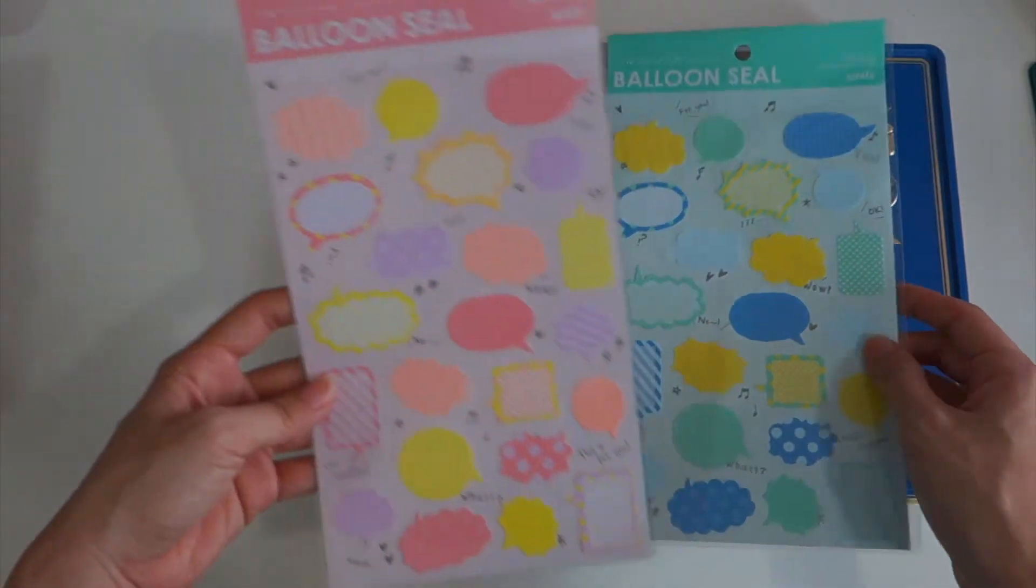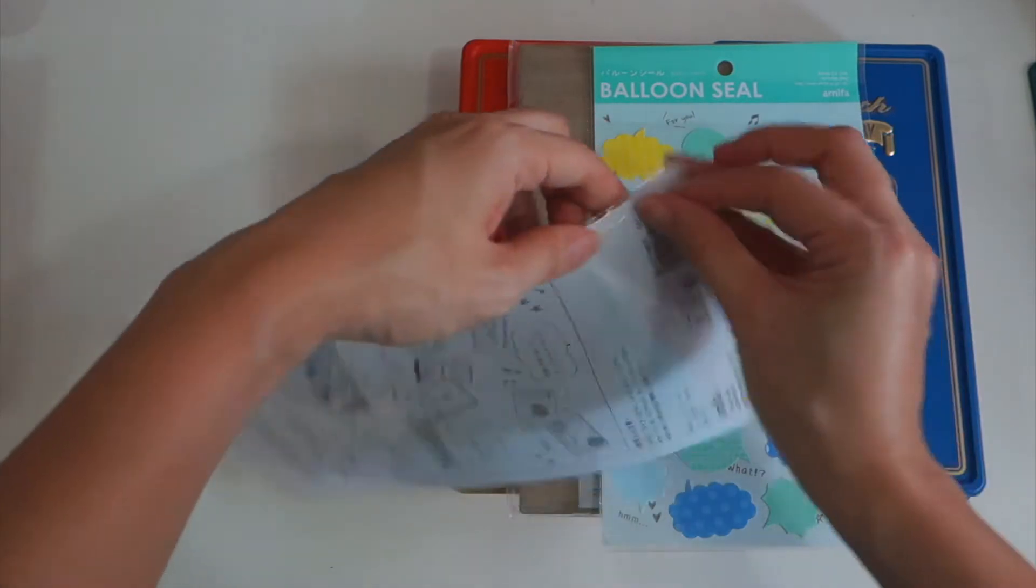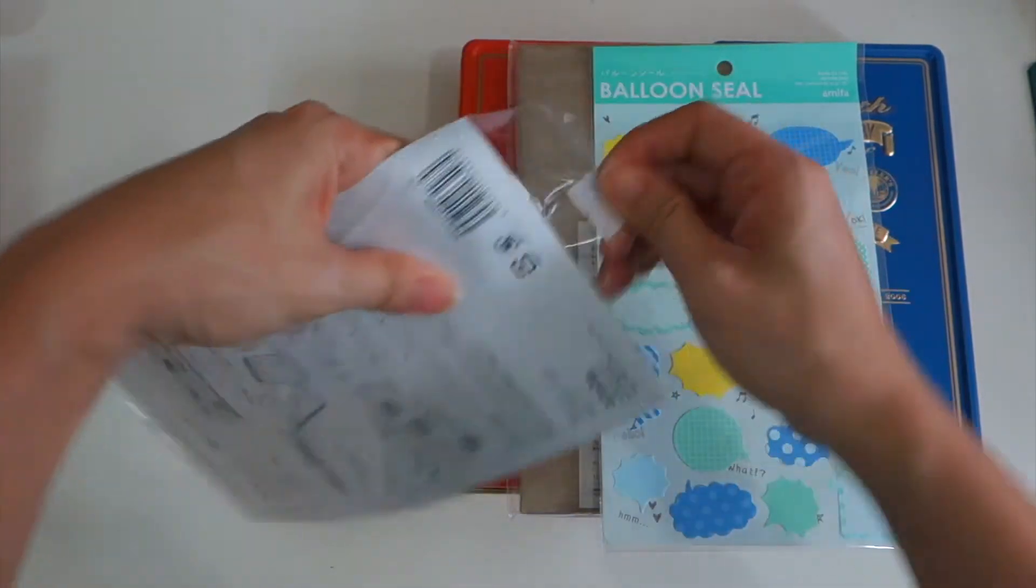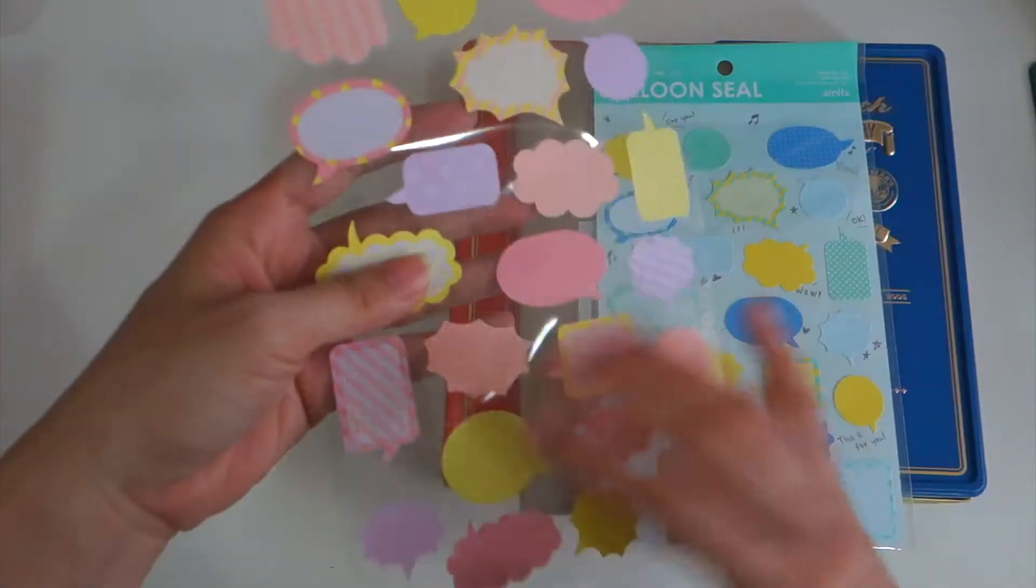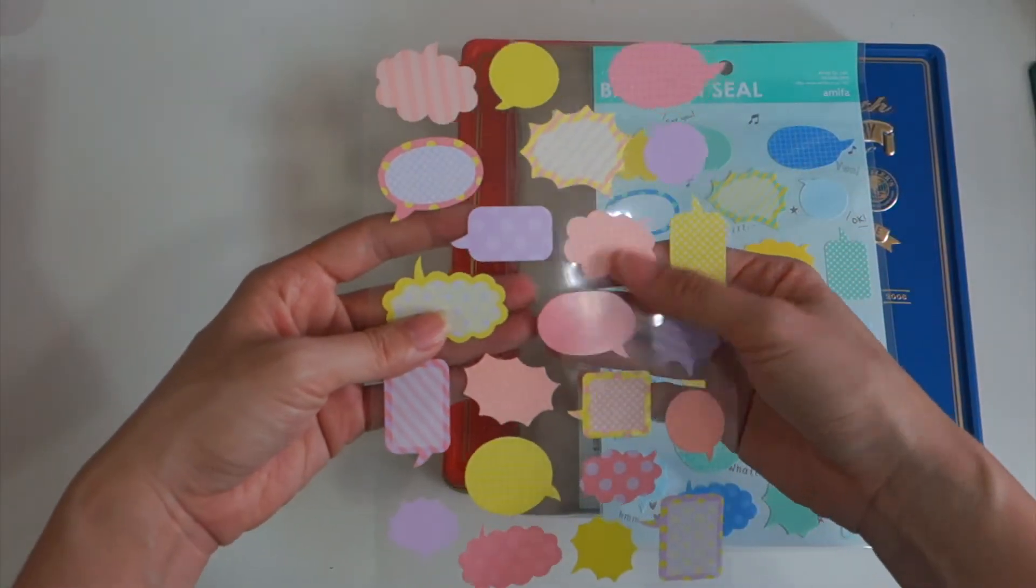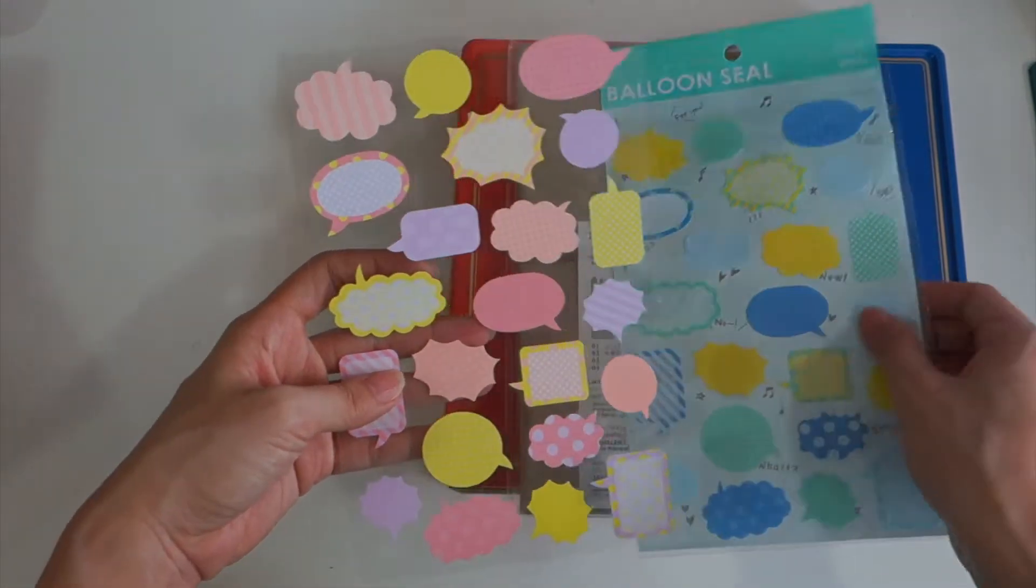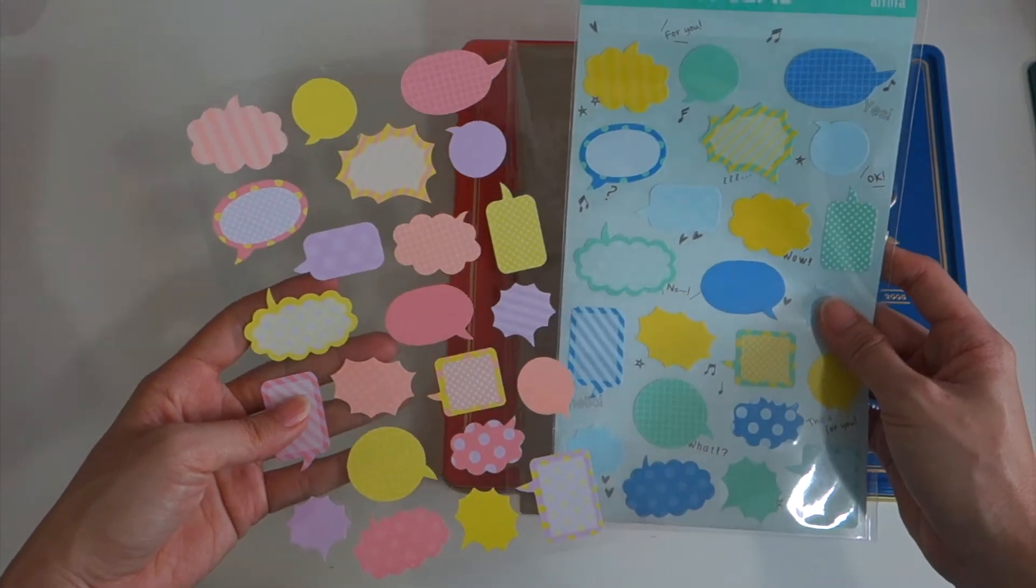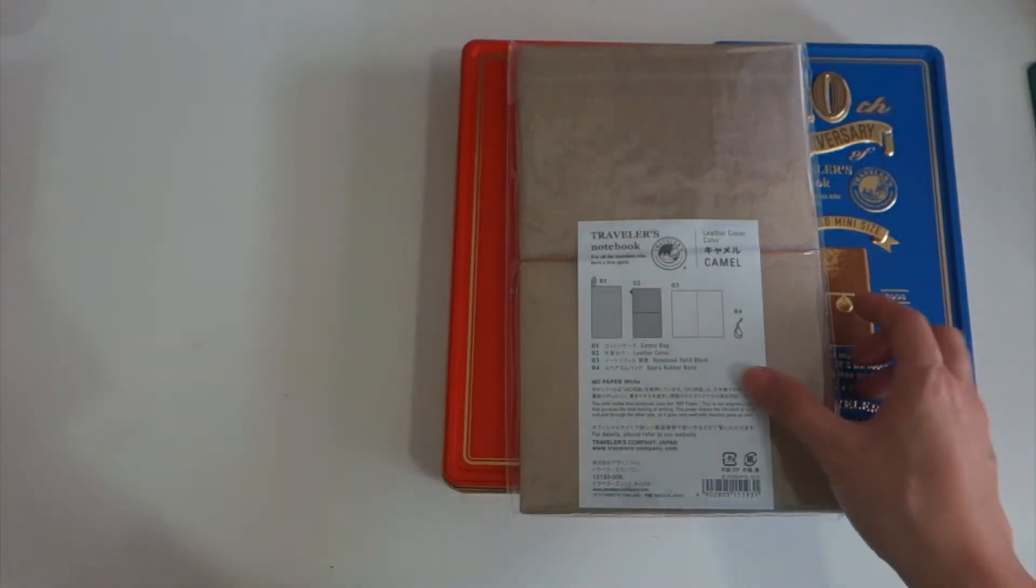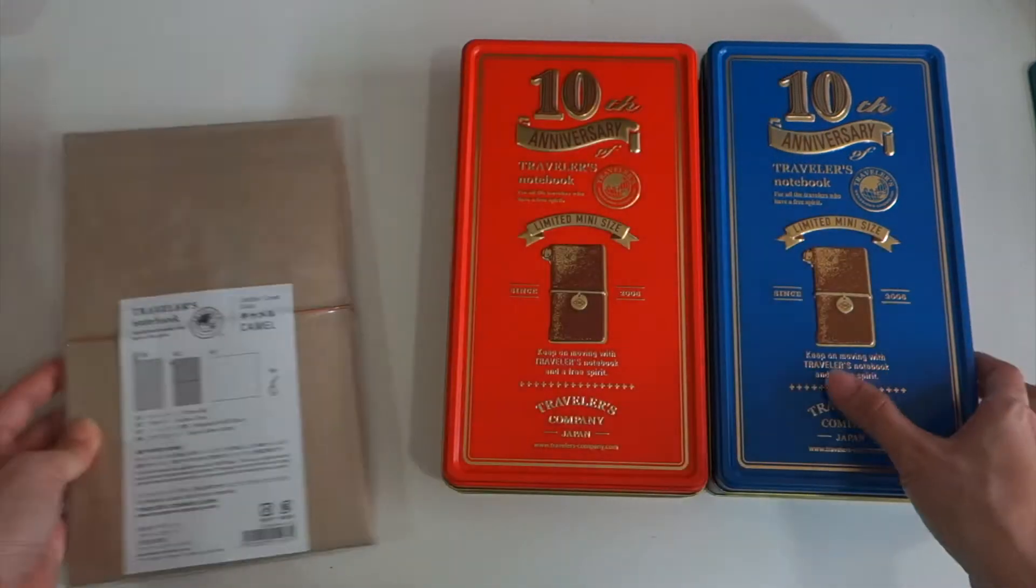I believe this is something you can write underneath. I'm not sure if it's transparent or no, this is not transparent, so you only can write on top of this. I got two different colors. So let's open the lighter cover first.